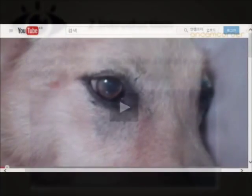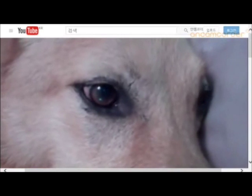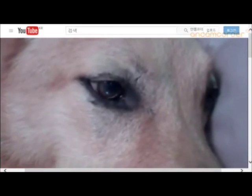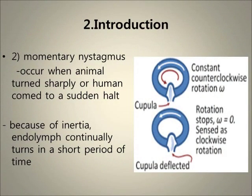In this video, this dog has canine peripheral vestibular disease with nystagmus. Nystagmus can occur when the animal is turned sharply or comes to a sudden halt, because of inertia — the endolymph continually turns for a short period of time.